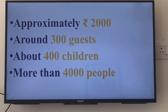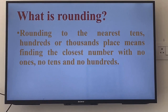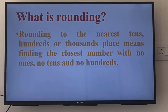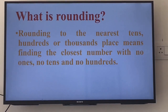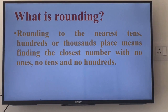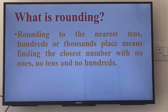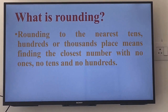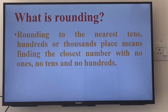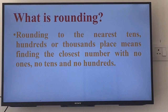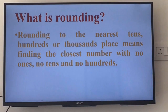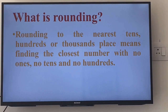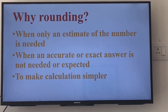What is rounding actually? Rounding of numbers gives us a quick idea about the information needed. Rounding to the nearest tens, hundreds, or thousands place means finding the closest number with no ones, no tens, and no hundreds.